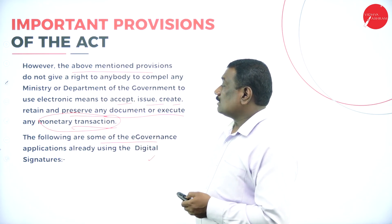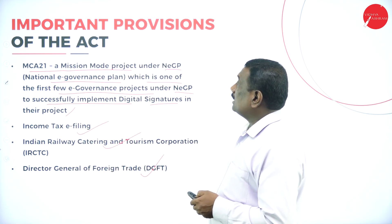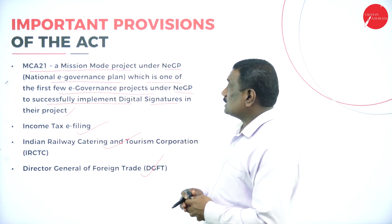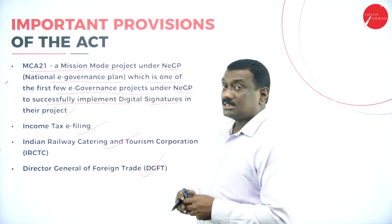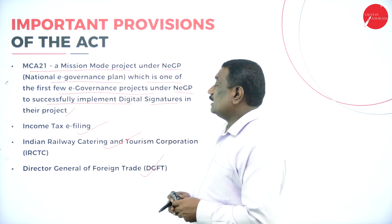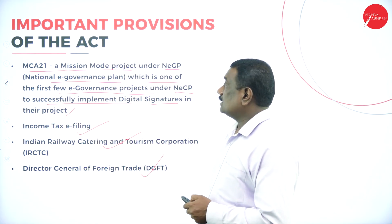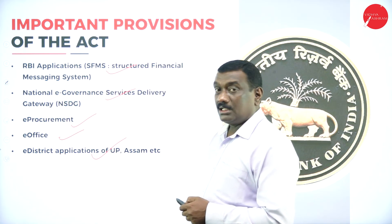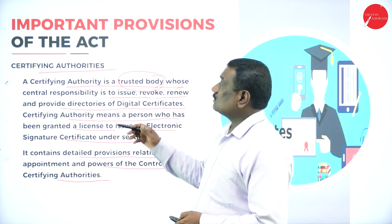E-governance applications already using digital signatures include MCA 21 under the National E-Governance Plan, income tax e-filing, IRCTC, Director General of Foreign Trade, RBI applications, National E-Governance Service Delivery, e-procurement, e-office, and e-district applications of UP and Assam.